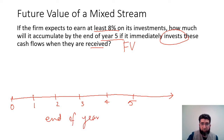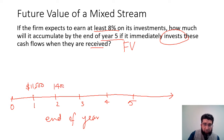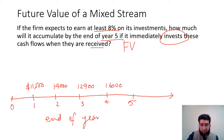This is an end-of-year problem. The dollar amounts as given are: at the end of the first year, $11,500; then $14,000; then $12,900; then $16,000 at the end of the fourth year; and $18,000 at the end of the fifth year.